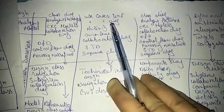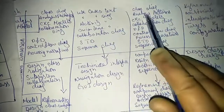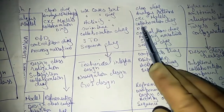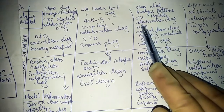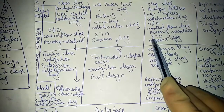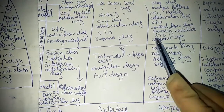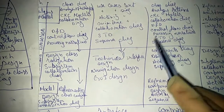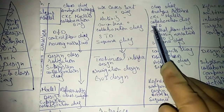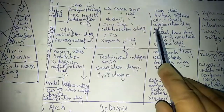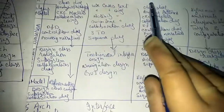At the component level we have class diagram, DFD, and state transition diagram — representing behavioral elements, flow-oriented elements, and class-based elements respectively.